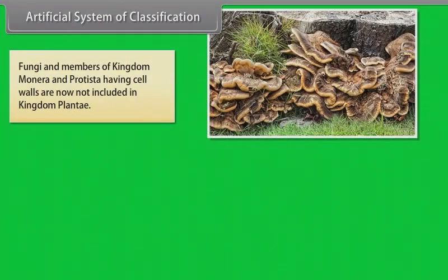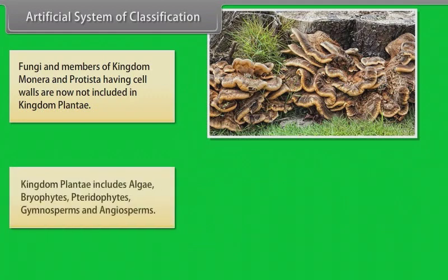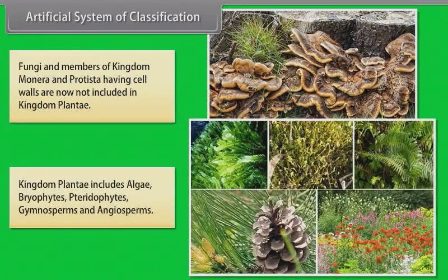Fungi and members of kingdom monera and protista having cell walls are now not included in kingdom plantae. Kingdom plant includes algae, bryophytes, pteridophytes, gymnosperms, and angiosperms.